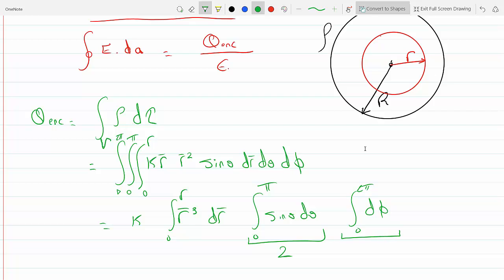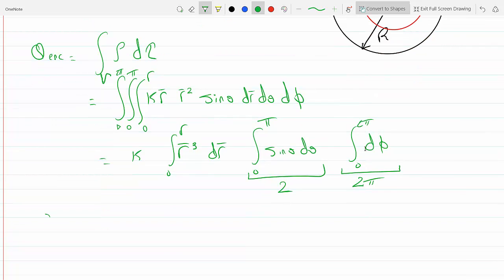And sine theta dθ from zero to π, this will give us a 2, and dφ from zero to 2π, this will give us a 2π.